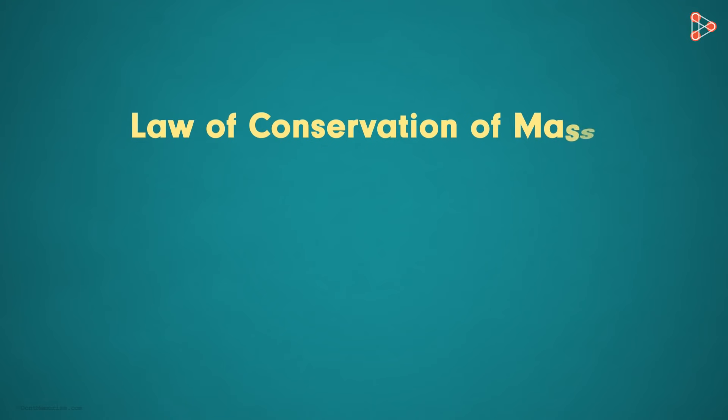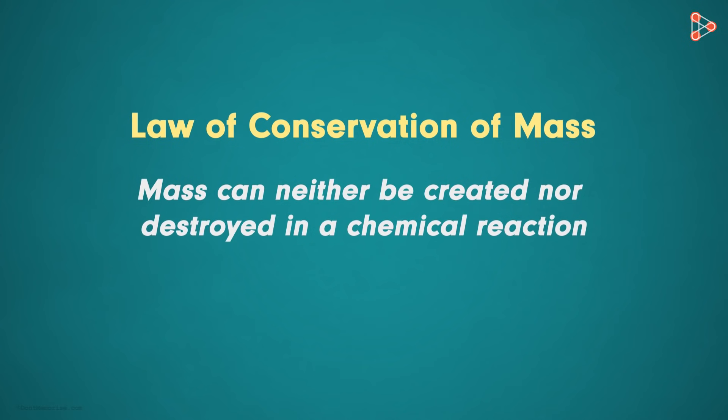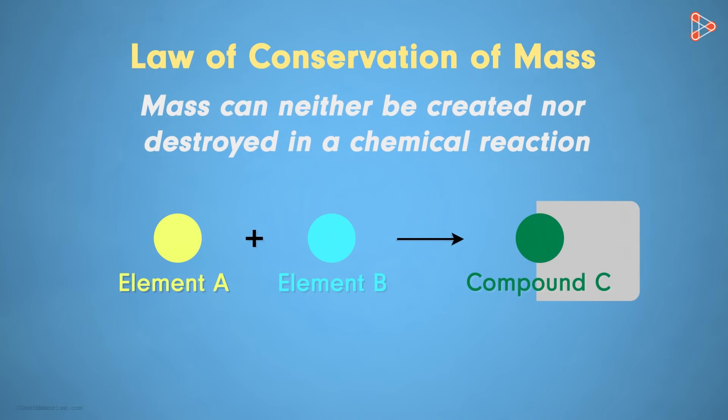Antoine Lavoisier put forth the Law of Conservation of Mass and do you know what it tells us? It states that mass can neither be created nor destroyed in a chemical reaction. He explained this law by saying that matter is formed from the pre-existing matter. And the mass of the newly formed matter will be the same as that of the pre-existing matter. We can neither create new matter nor destroy the existing matter.